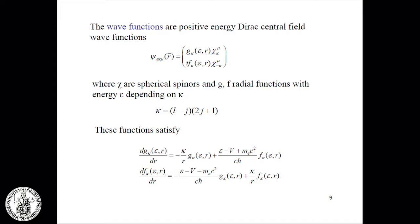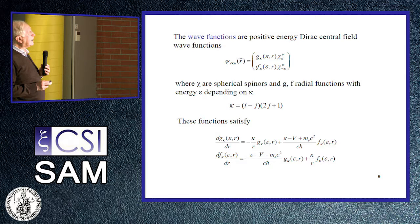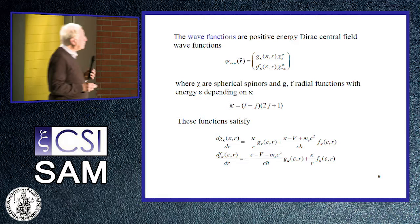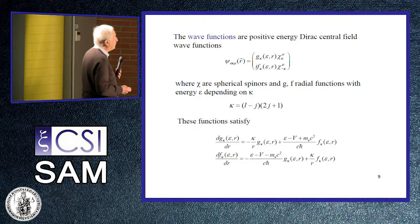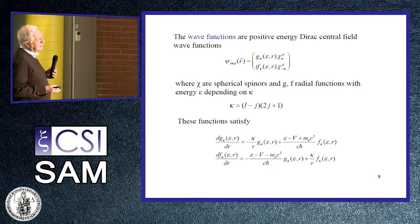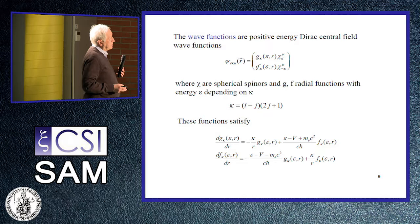The wave functions are positive-energy Dirac central-field wave functions, with upper and lower components. The spinors are chi, and the radial functions depend on the energy epsilon of the electron and radial coordinate r. The standard form of the positive-energy scattering solutions of the Dirac equation is used. The energy epsilon and kappa — which depends on the orbital angular momentum and total angular momentum j — characterize these solutions. The radial wave functions satisfy the coupled Dirac differential equations with potential V and energy epsilon.